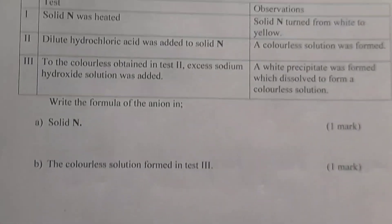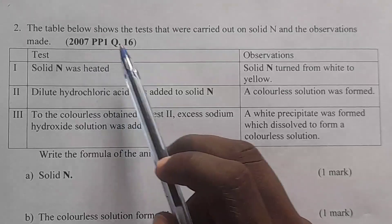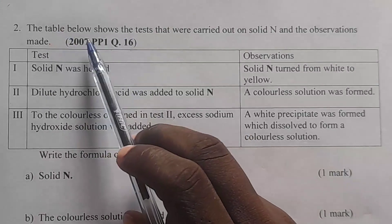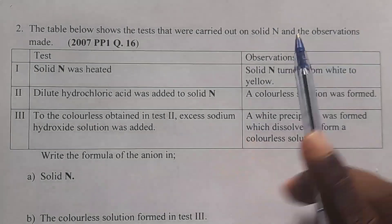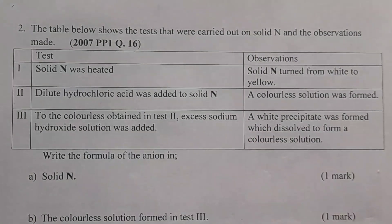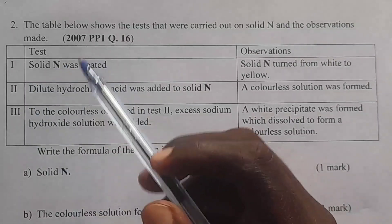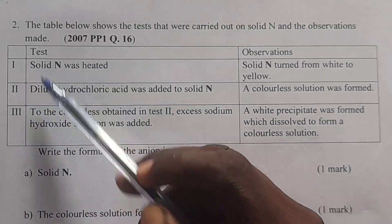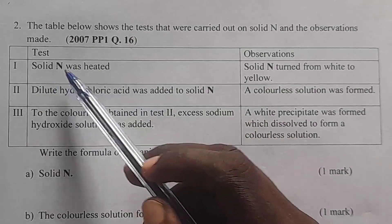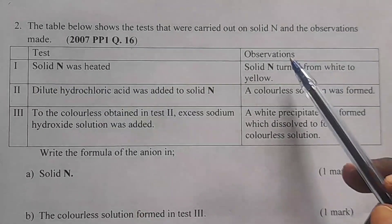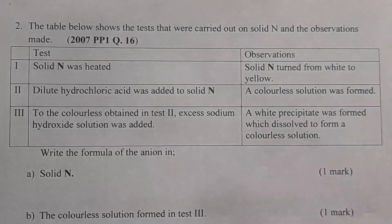Next, we are going to go to question 2. In question 2, we have borrowed KCC 2007, paper 1, question 16. We are told the table below shows the tests carried out on a solid N and the observations made. In experiment 1, solid N was heated, and the observation is: solid N turns from white to yellow.